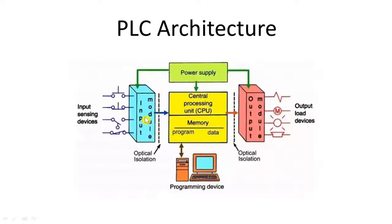But for the central processing unit we require a digital signal. So the input module converts this signal into a digital signal first. In this way we can connect analog or digital input to the central processing unit.